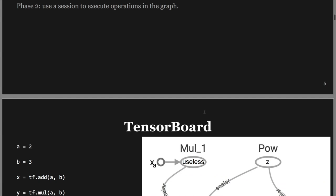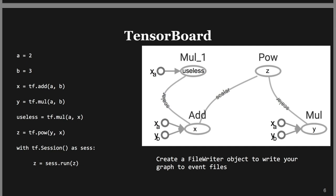We are hopefully all very familiar with this picture now, where when we are trying to run Z, and if Z does not depend on a node called 'useless', then that node is not going to get calculated. You can visualize everything in TensorBoard by creating FileWriter objects.